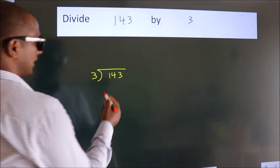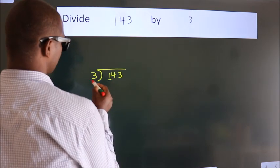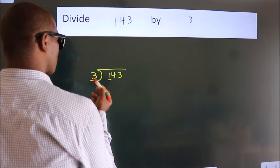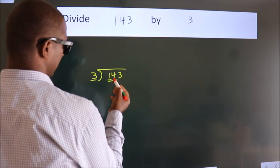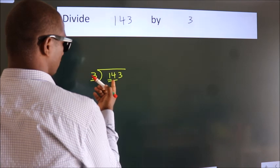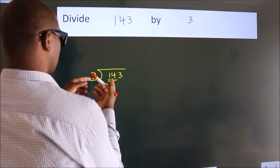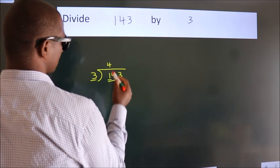Next, here we have 1, here 3. 1 is smaller than 3, so we should take 2 numbers, 14. A number close to 14 in the 3 table is 3 fours, 12.